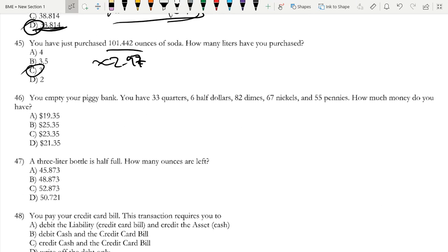You empty your piggy bank. You have 33 quarters, 6 half dollars, 82 dimes, 67 nickels, and 55 pennies.